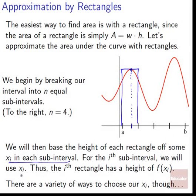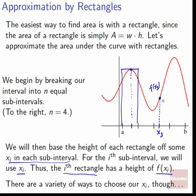For the i-th subinterval, we use xi to determine that height. The i-th rectangle has a height of f evaluated at xi. So xi is the horizontal reference location we use to determine the height for the i-th rectangle. For example, in our third subinterval we look at x3, check what height that goes to — f evaluated at x3 — and that determines the height for our third rectangle.